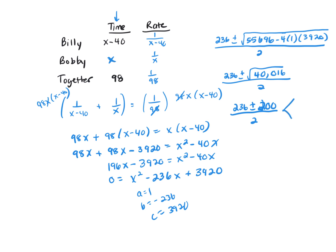And that gives you the plus 1 and the minus, 236 plus 200, divided by 2, is 218.